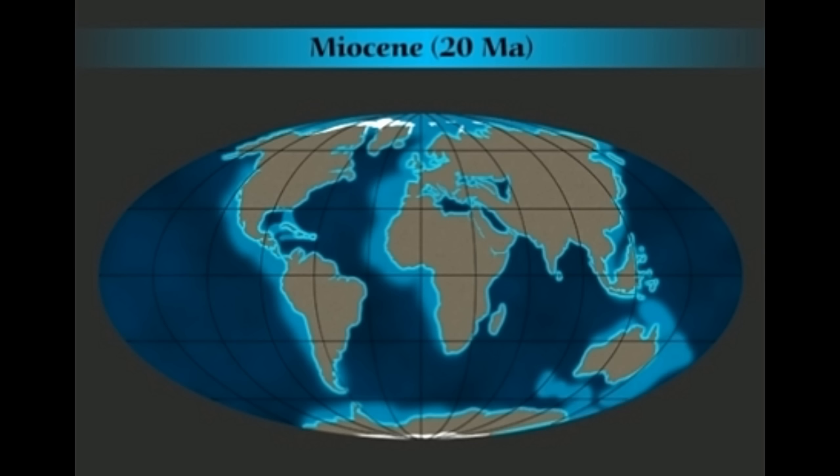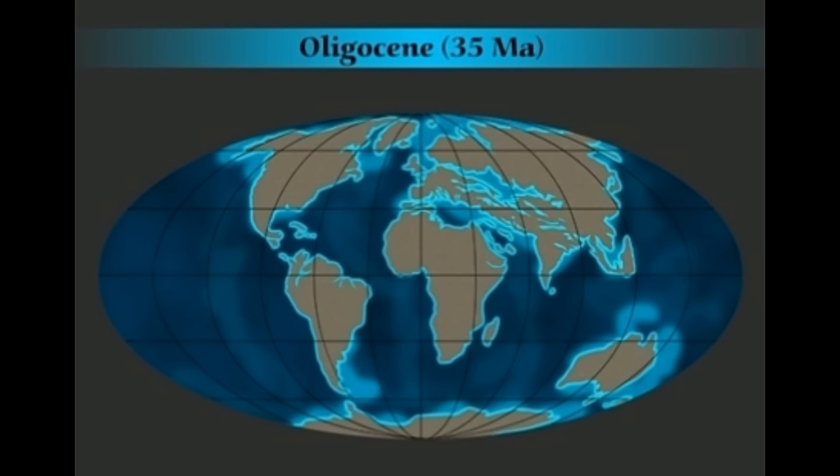South America shifted north to merge with the North American tectonic plate by a narrow isthmus. Lastly, the Indian Plate separated from Africa and collided with the Eurasian Plate to form the youngest mountain chain in the world — the Himalayas — around 50 million years ago. Research indicates that Pangaea actually split into two larger continental land masses called Laurasia and Gondwanaland.